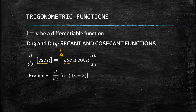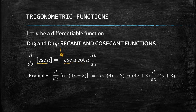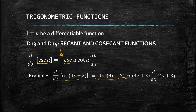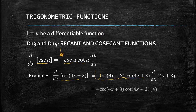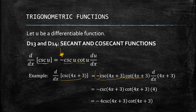For example, if we have csc(4x + 3): we copy cosecant of (4x + 3), apply the negative sign because it's cosecant, write cotangent with the same argument, and multiply by the derivative of (4x + 3), which is 4. Rearranging gives us −4·csc(4x + 3)·cot(4x + 3).